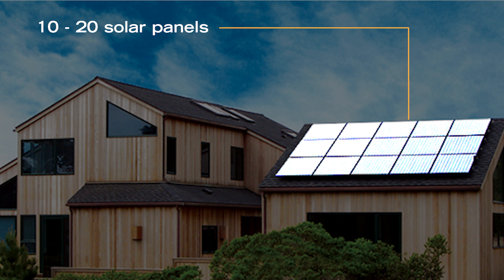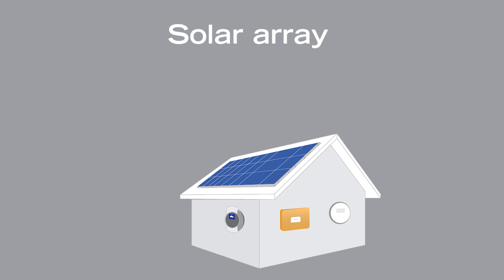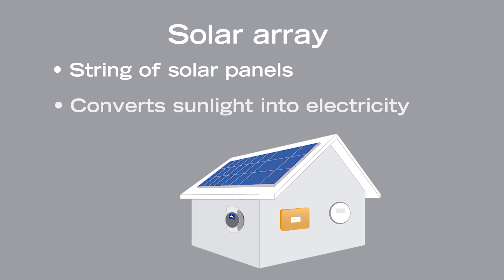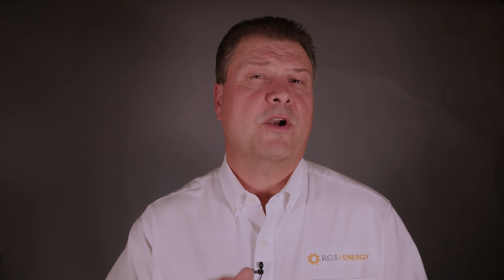The average home requires solar arrays of between 10 and 20 solar panels. Now you know a solar array is simply a string of solar panels on your roof working together to convert sunlight into electricity.